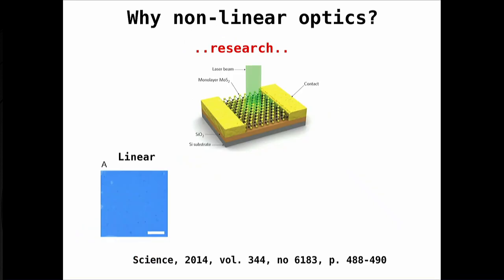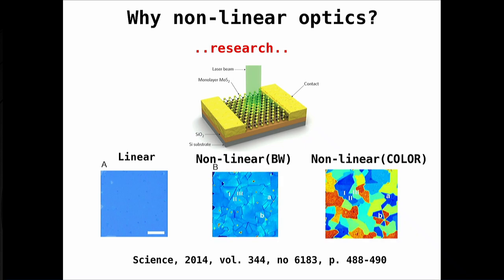Here is an example from a 2014 experiment on molybdenum disulfide, a 2D material. Under a regular camera it appears light blue, but if you image using the nonlinear response — sending light at one frequency and measuring at twice the frequency — you can see that what looked like a single flake is actually composed of many flakes. Coloring the flakes by intensity also reveals their orientation, because nonlinear response is sensitive to the angle between the light and crystal orientation, while linear response is not. This is a typical application for characterizing 2D materials.